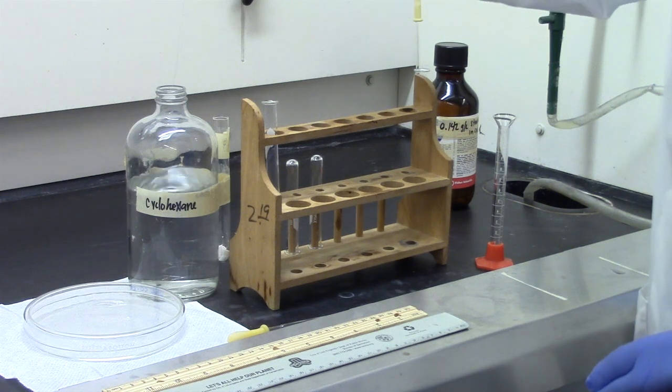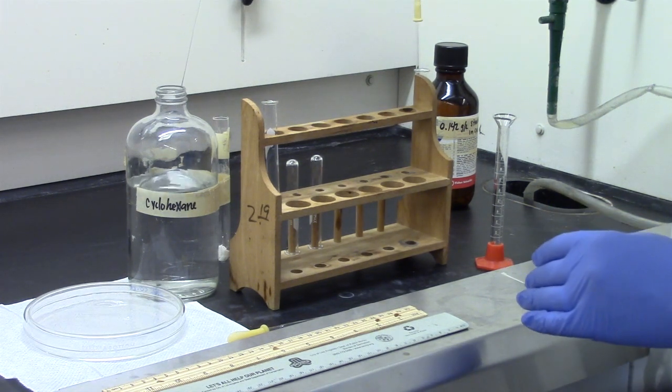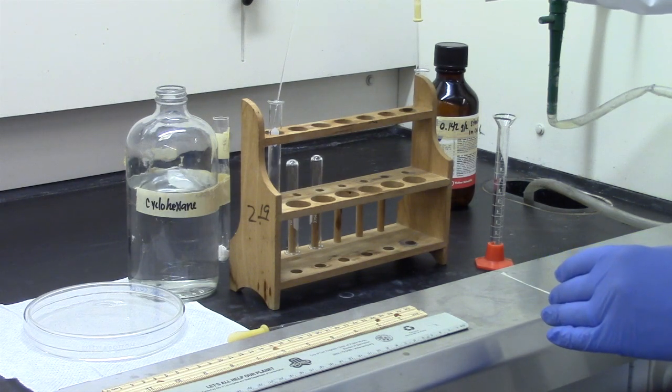Calibration of pipette. Obtain a pasture pipette. Cyclohexane will be used to calibrate the pipette. Fill a small test tube about halfway with cyclohexane.